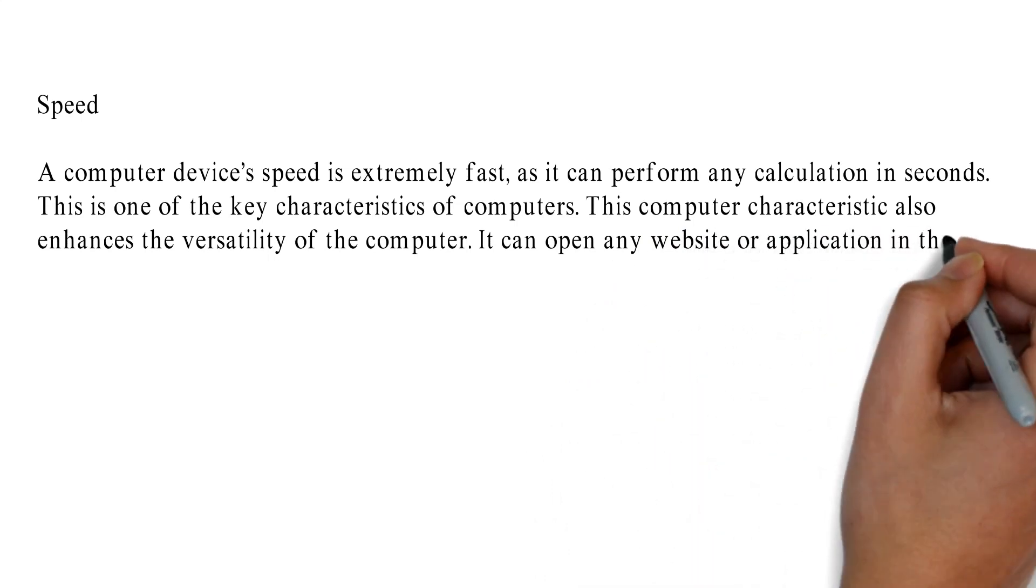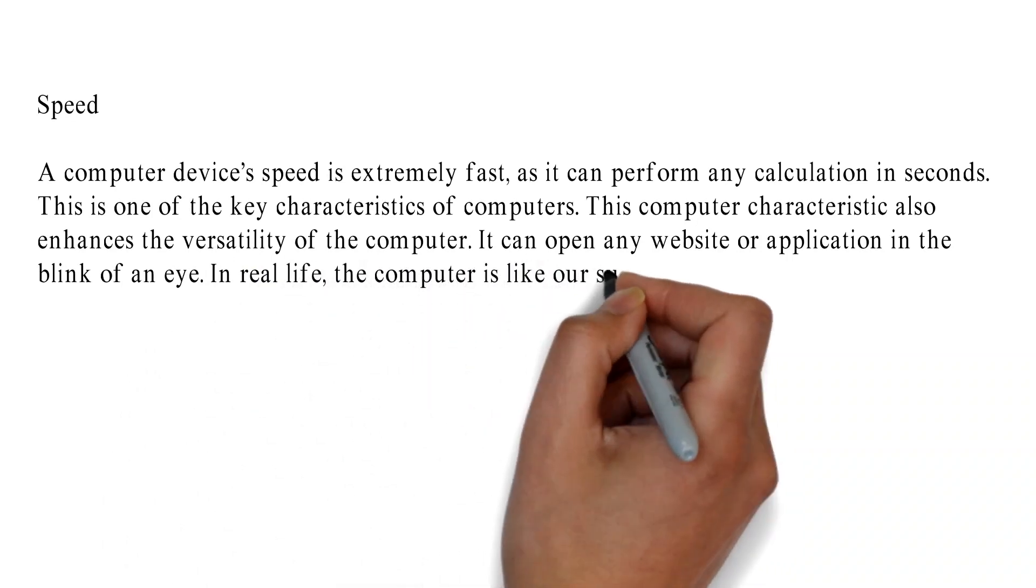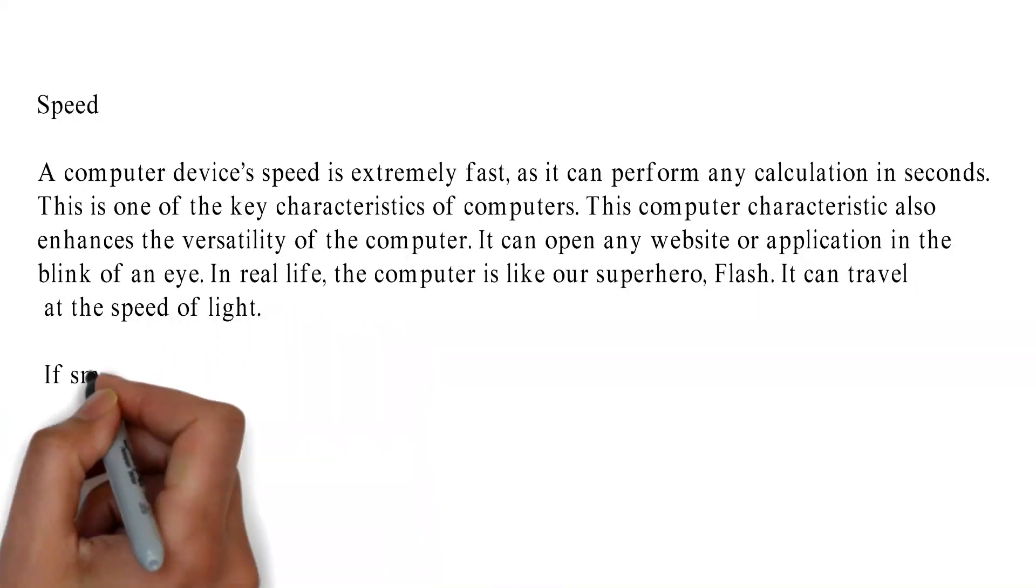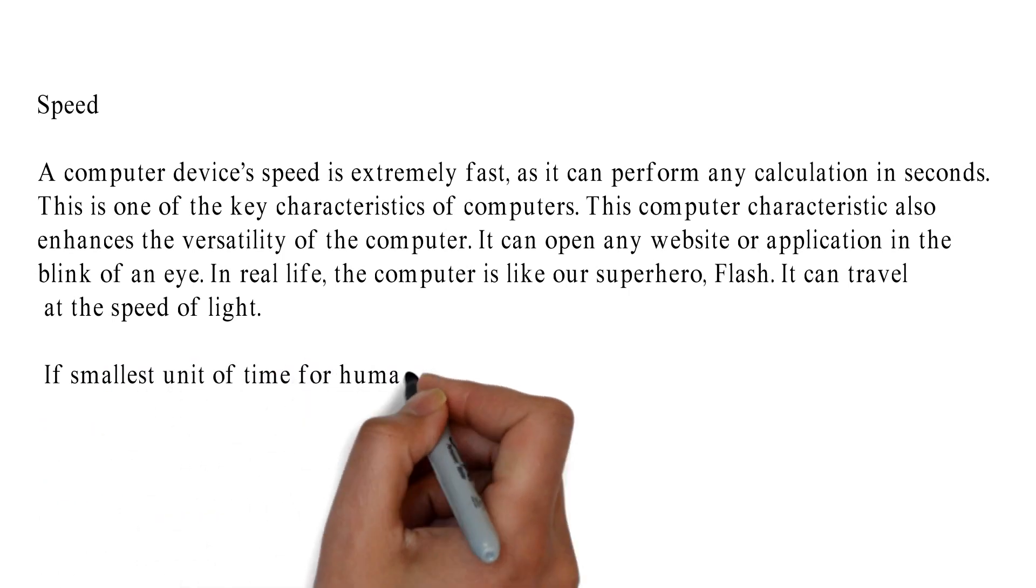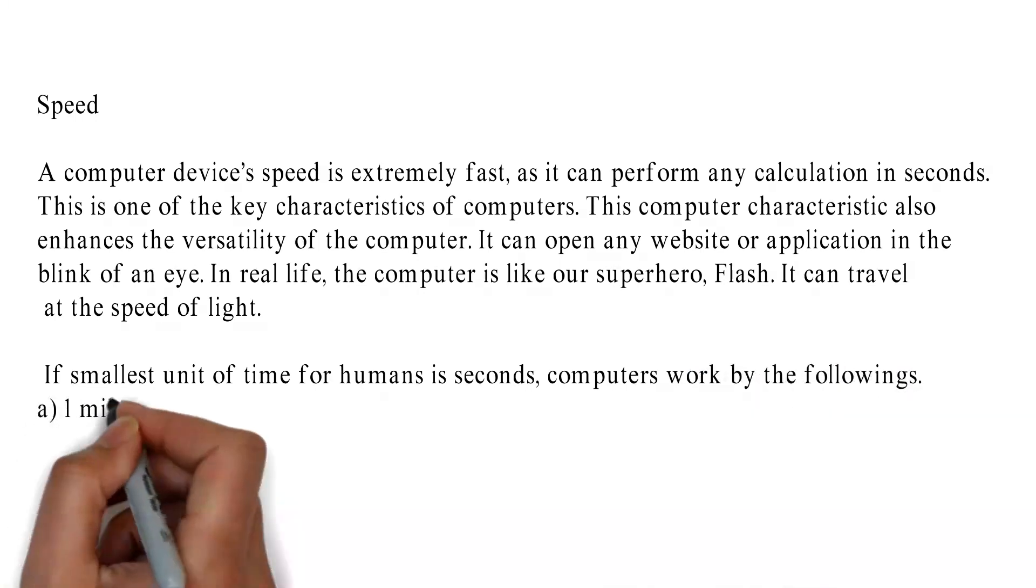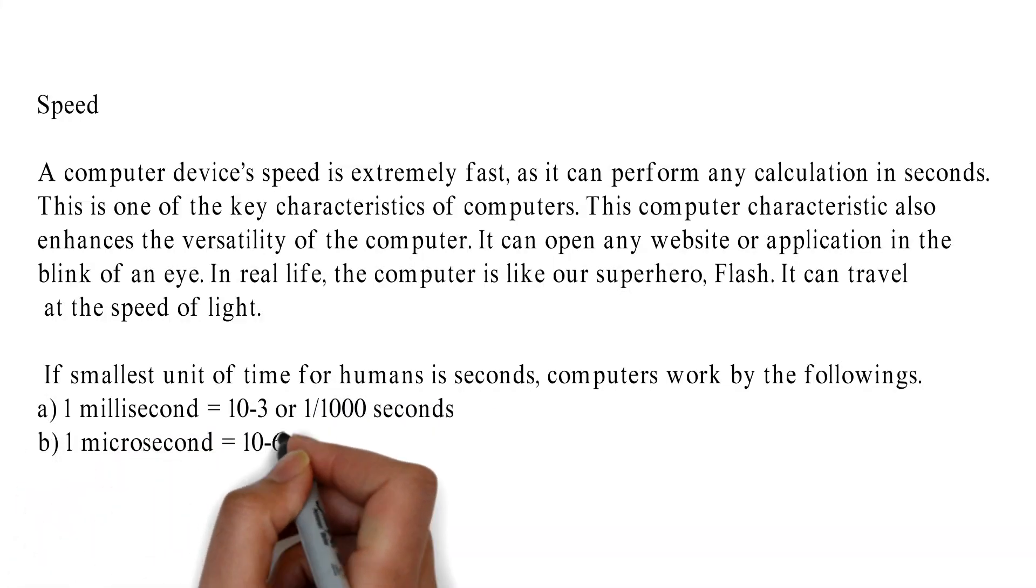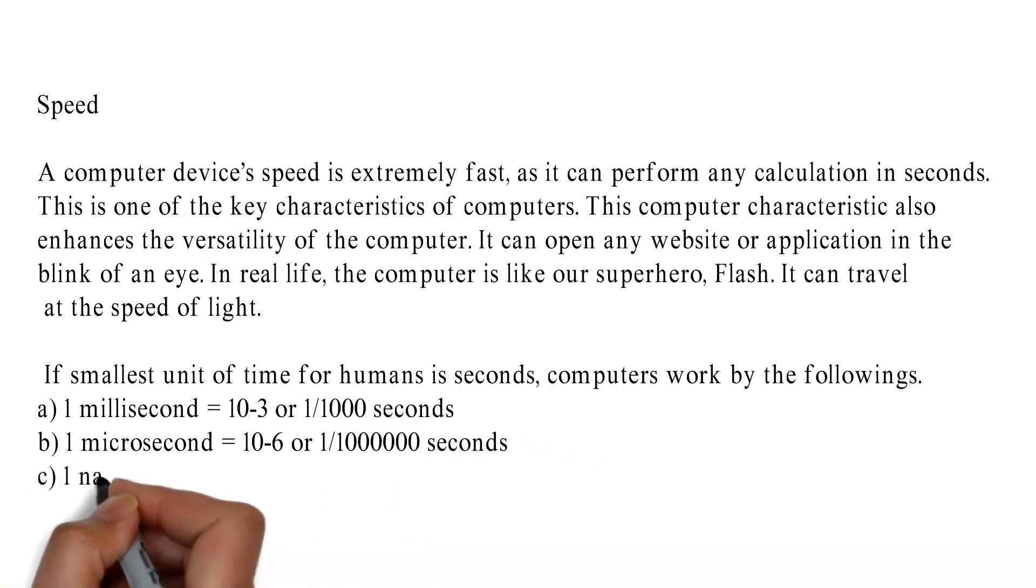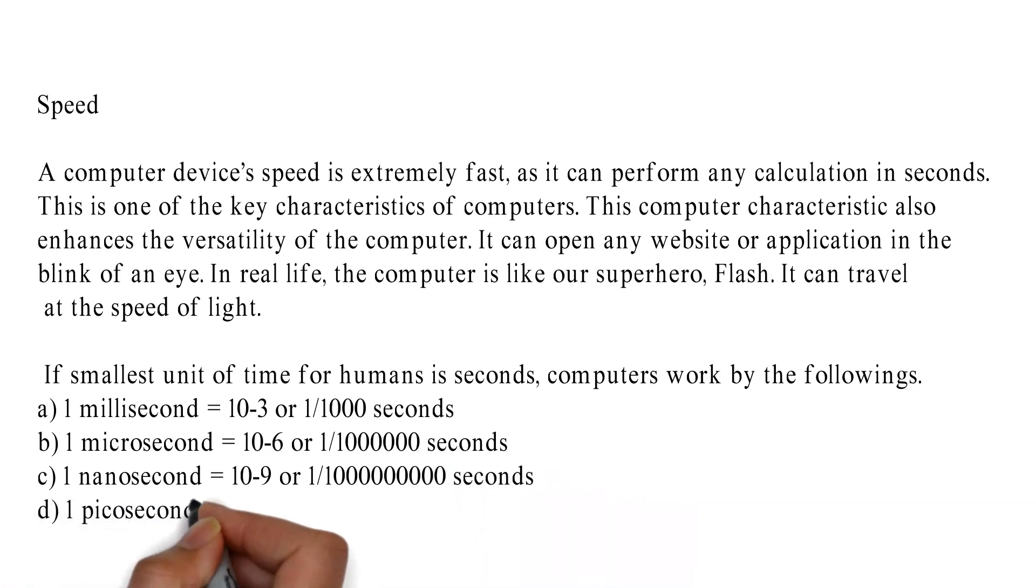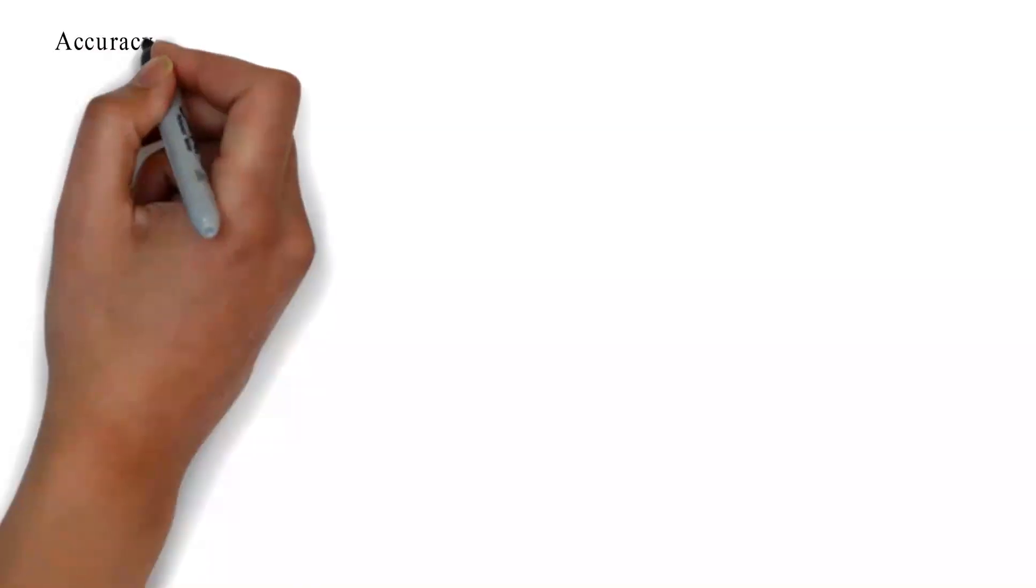If the smallest unit of time for humans is seconds, computers work by the following: A) one millisecond equals 10^-3 or 1/1000 seconds. B) one microsecond equals 10^-6 or 1/1,000,000 seconds. C) one nanosecond equals 10^-9 or 1/1,000,000,000 seconds. D) one picosecond equals 10^-12 or 1/1,000,000,000,000 seconds.